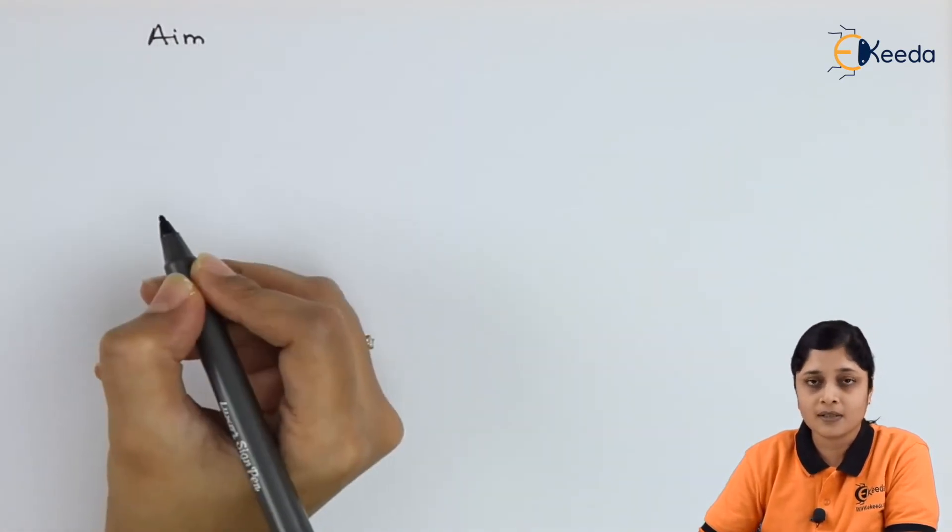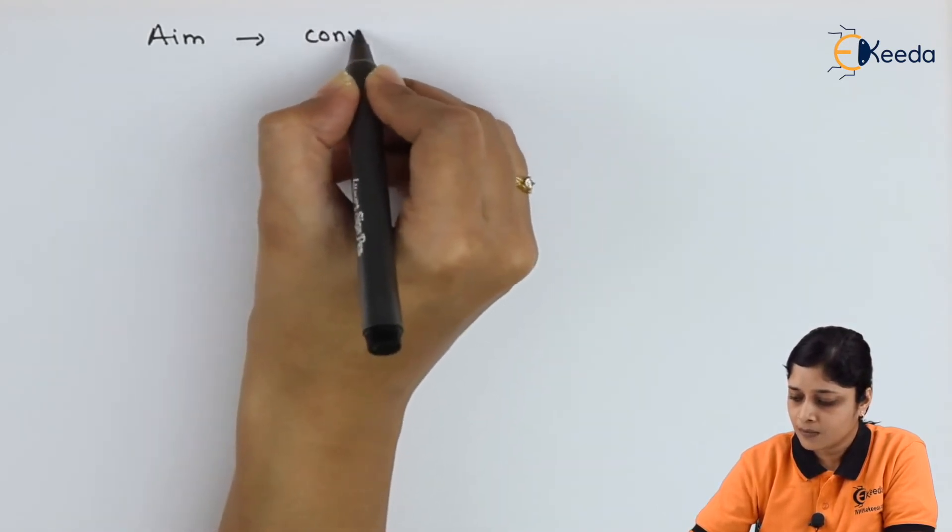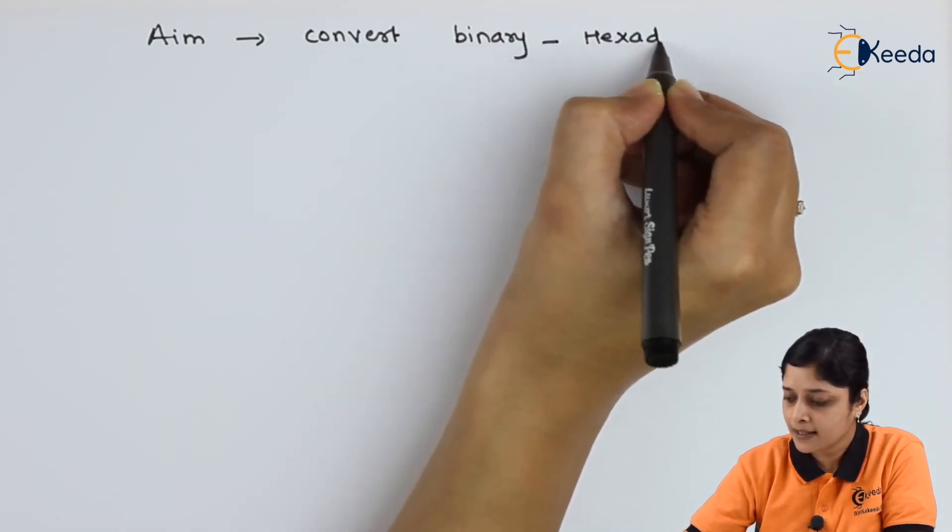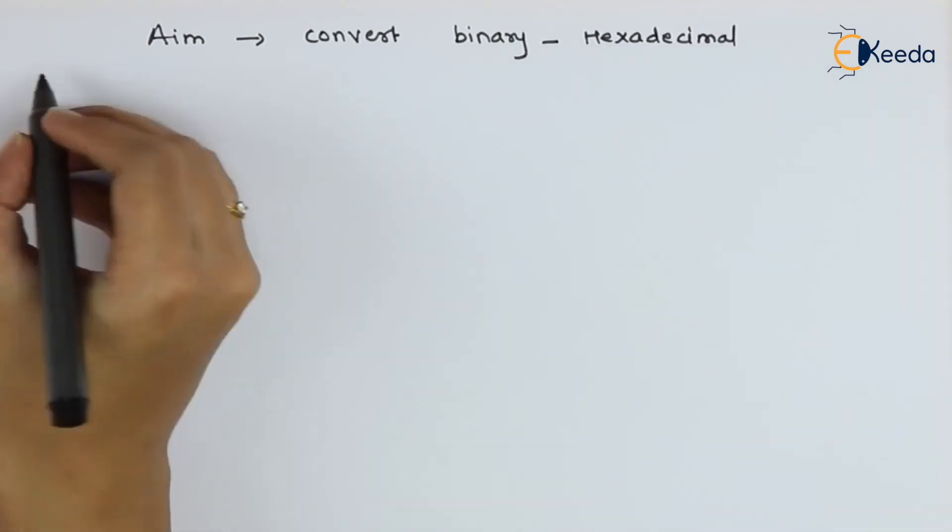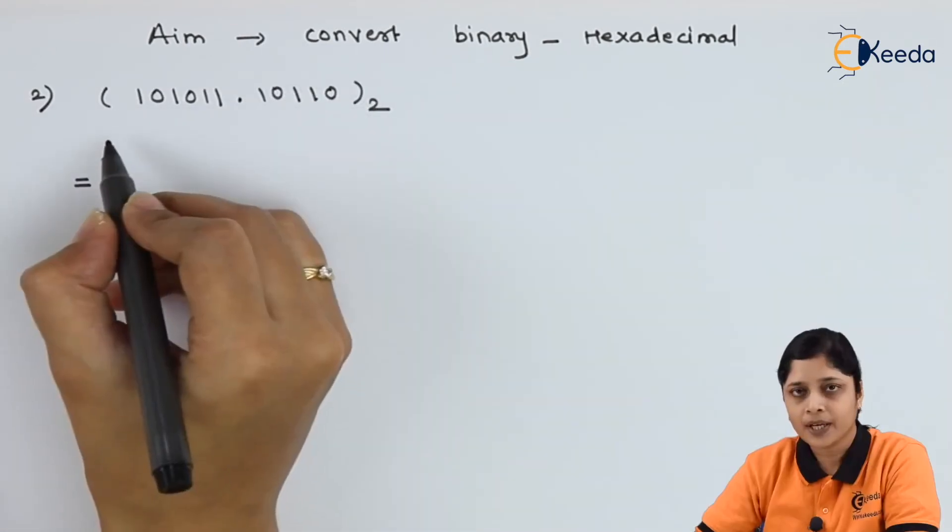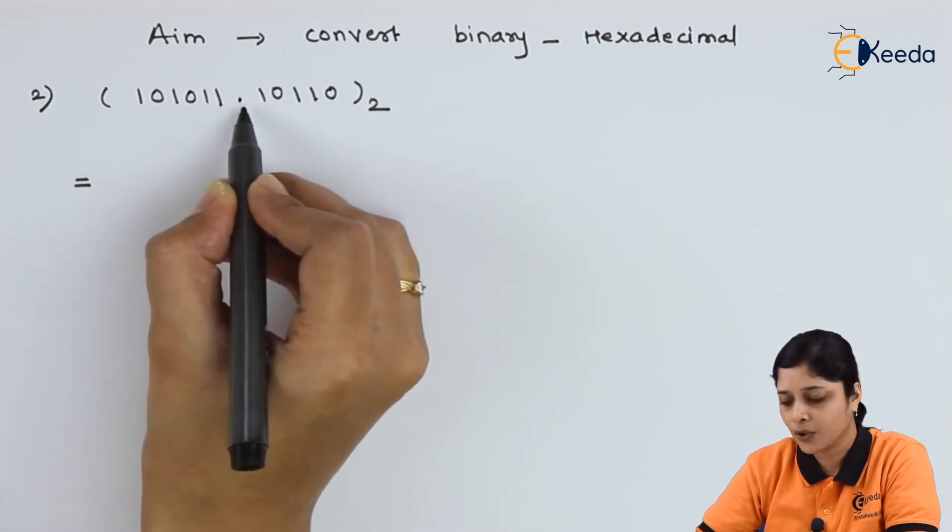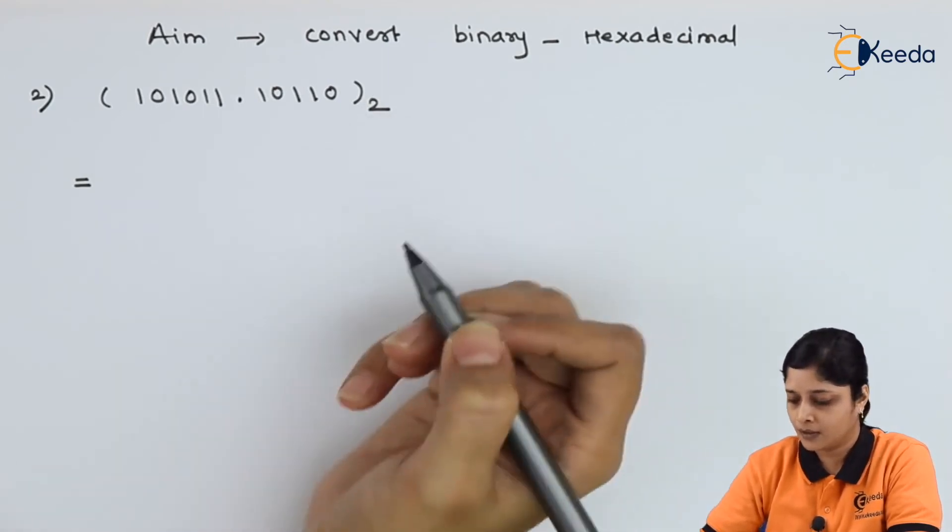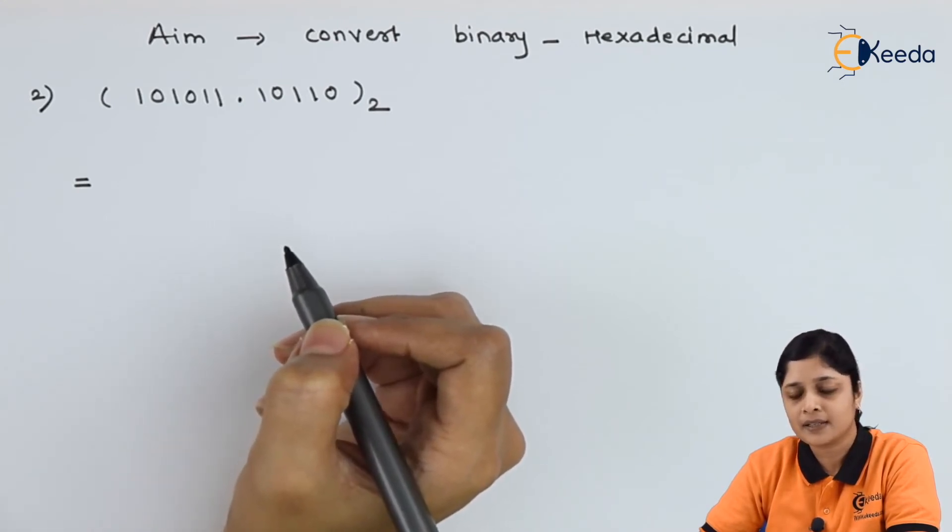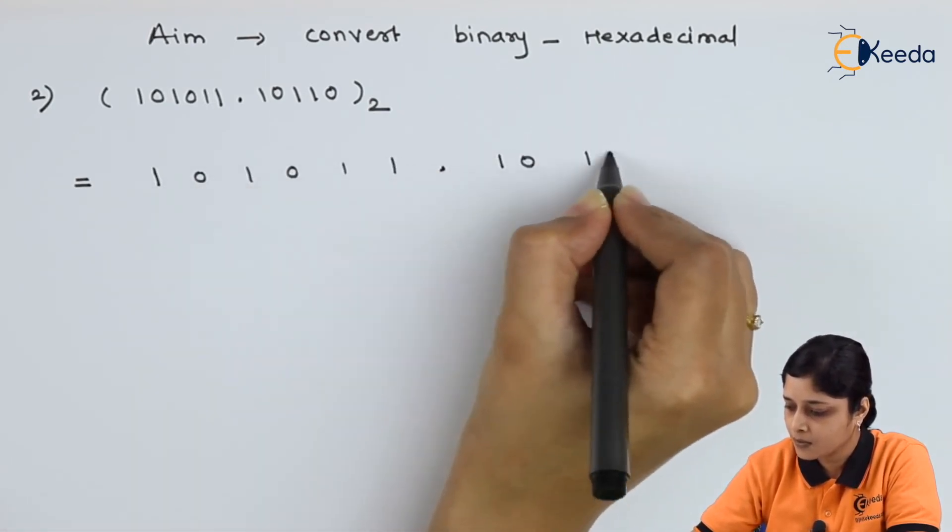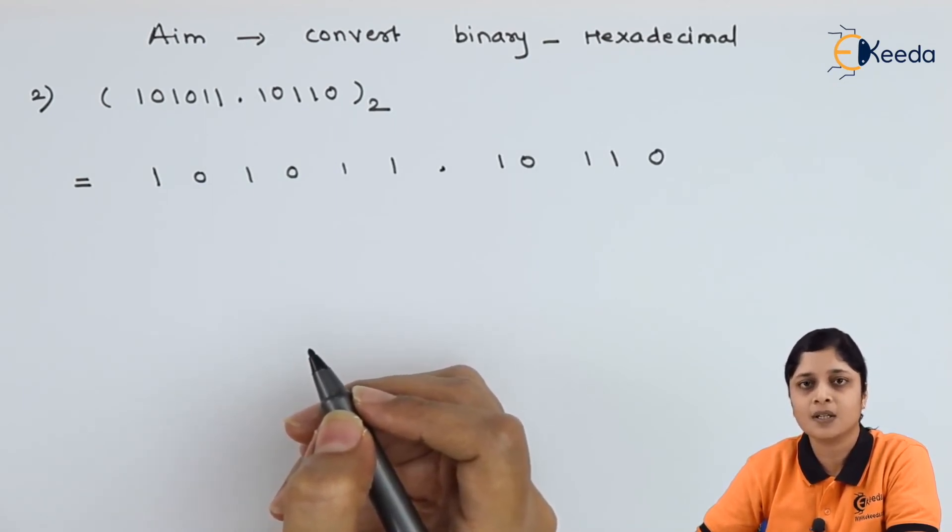Let's start with second example. Always you should know what is your aim. Convert binary number to hexadecimal number. We have second example 101011.10110 to the base 2. Don't forget to write the base. The procedure to solve binary to hexadecimal is like this. Write down again the binary number with spacing.